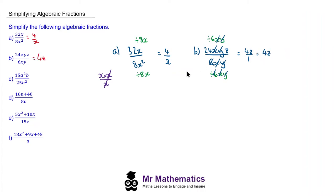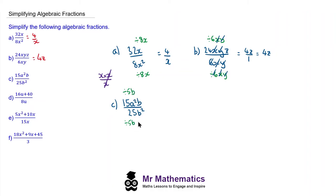Do you want to try and simplify the fraction in question c? You can pause the video and resume it when you're ready. Welcome back. The first thing we're going to do is find the highest common factor. 5 goes into 15 and 25, so we'll divide both by 5. And b goes into b and b squared, so our highest common factor is 5b.